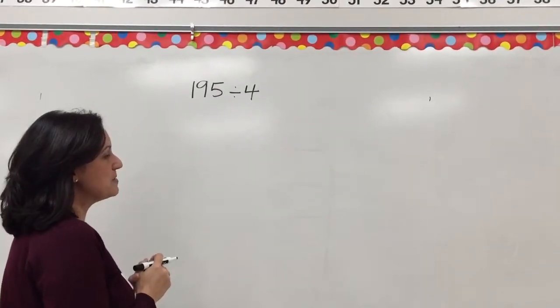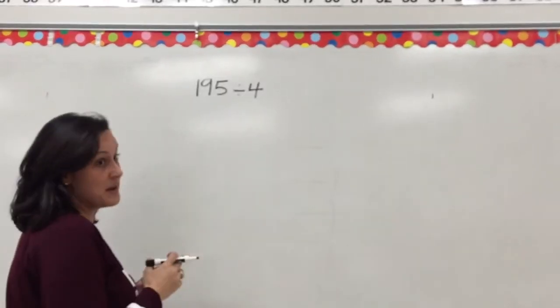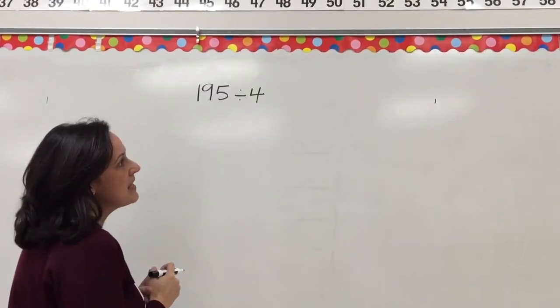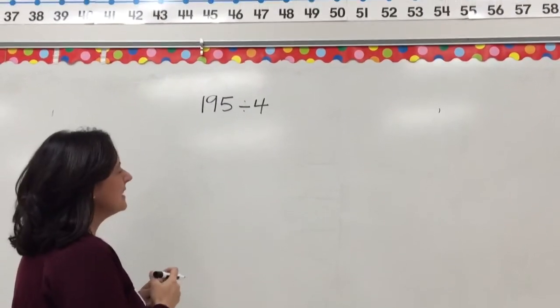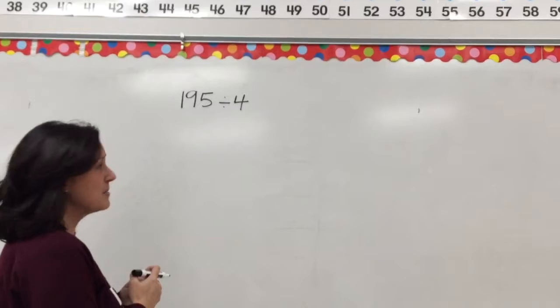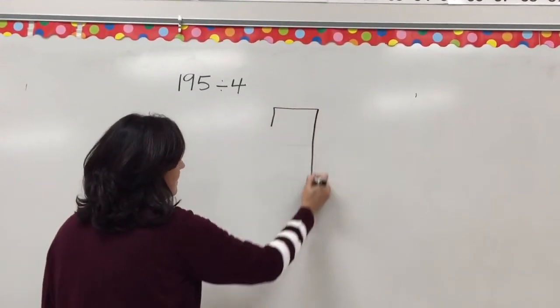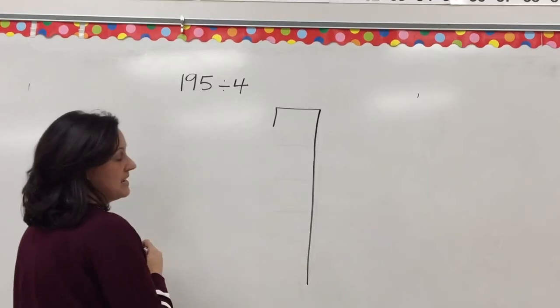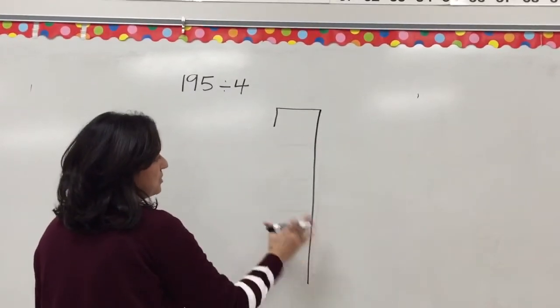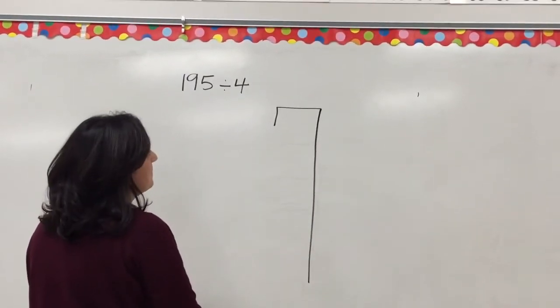All right, today we're going to be showing the 7-Up method. The 7-Up method for division is really partial quotients, but I call it 7-Up because of the big 7 that the division house makes. And this is how we structure the problem.